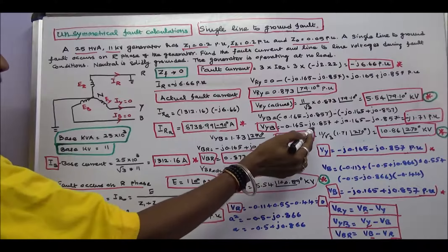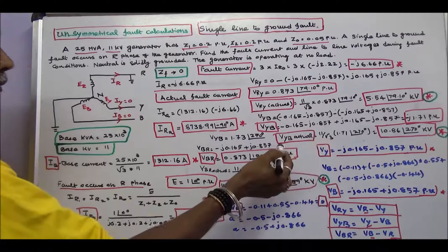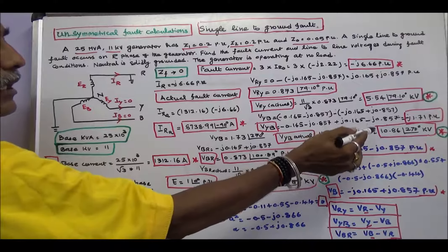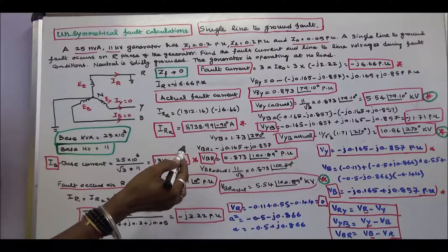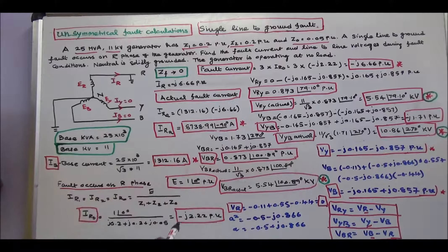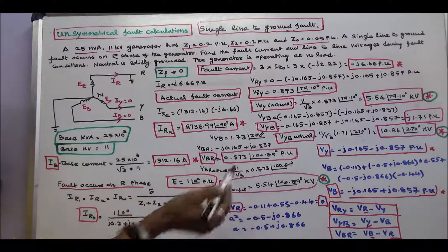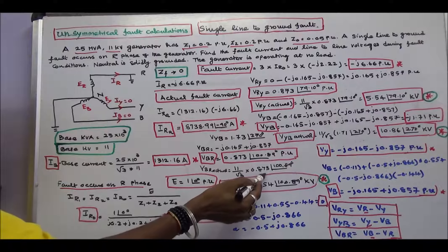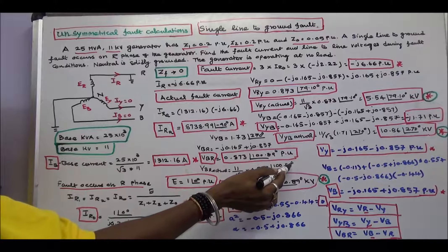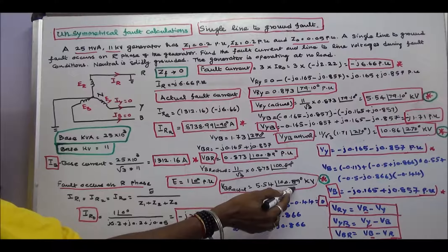VRY actual equals 11 divided by root 3 into 0.873 angle 79.10 degrees, which equals 5.54 angle 79.10 degrees KV. VYB equals VY minus VB, which equals minus j 1.71 per unit, corresponding to 270 degrees. Therefore VYB actual equals 11 divided by root 3 into 1.71 angle 270 degrees, which equals 10.86 angle 270 degrees KV. VBR equals VB minus VR, where VR is 0, giving VBR equal to 0.873 angle 100.89 degrees per unit. VBR actual equals 5.54 angle 100.89 degrees KV.